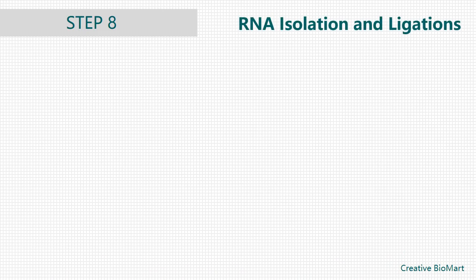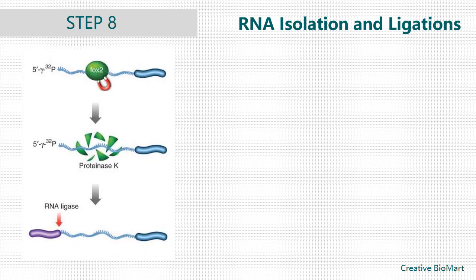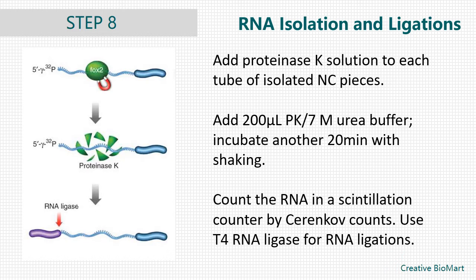Step 8, RNA Isolation and Ligations. Add 200 µL of proteinase K solution to each tube of isolated NC pieces. Incubate 20 minutes at 37°C with shaking. Add 200 µL PK-urea buffer. Incubate another 20 minutes at 37°C with shaking. Spin down RNA at full speed in a cold centrifuge for 30 minutes. Wash the pellet with 100 µL of 75% ethanol, then dry the pellet in a speed-vac. Count the RNA in a scintillation counter by Cherenkov counts. Use T4 RNA Ligase for RNA ligations.